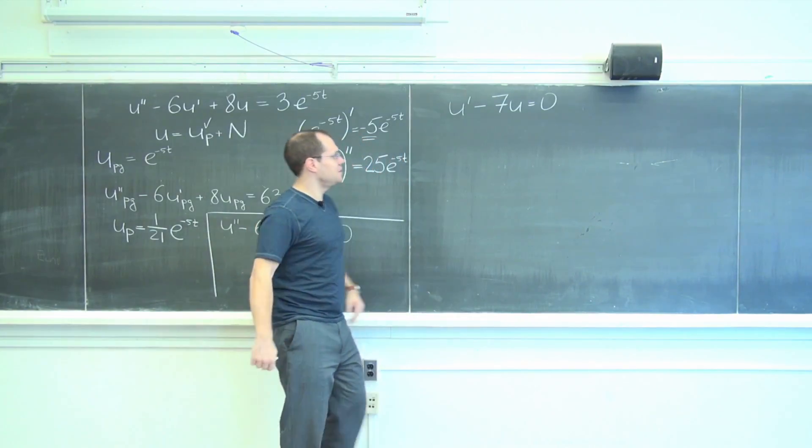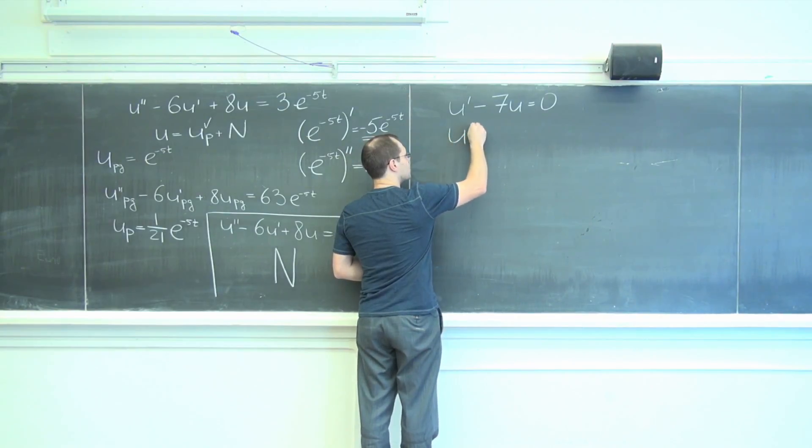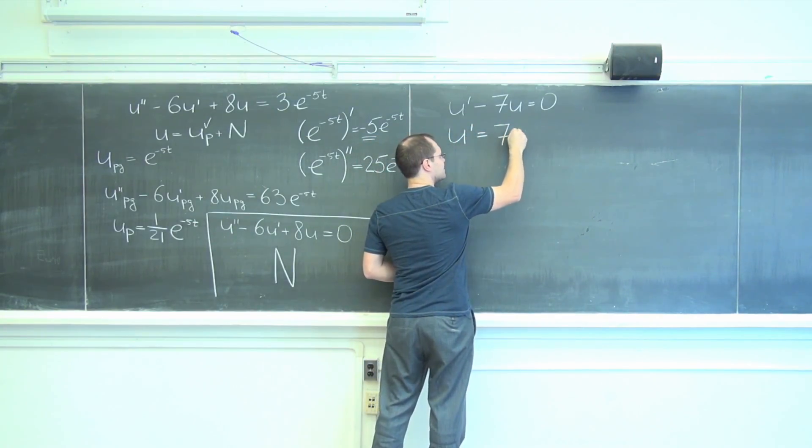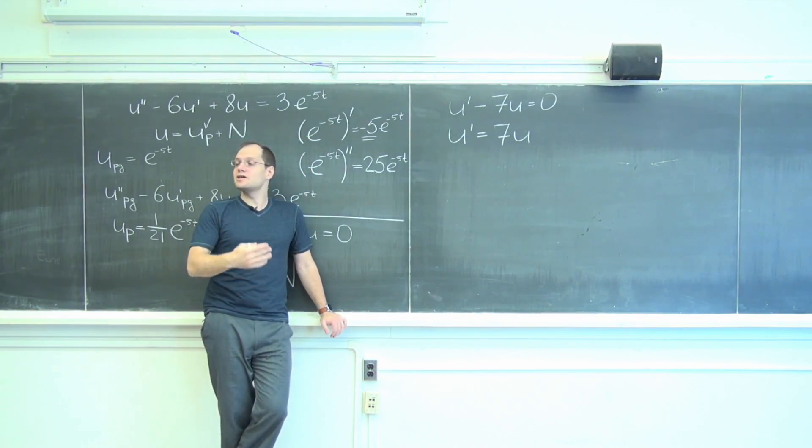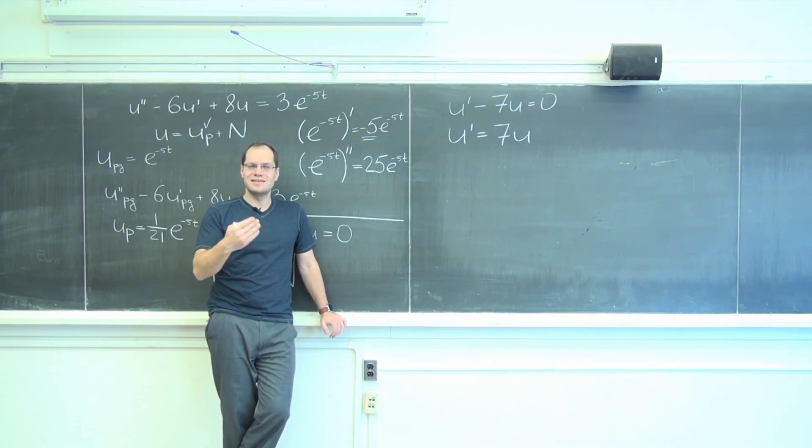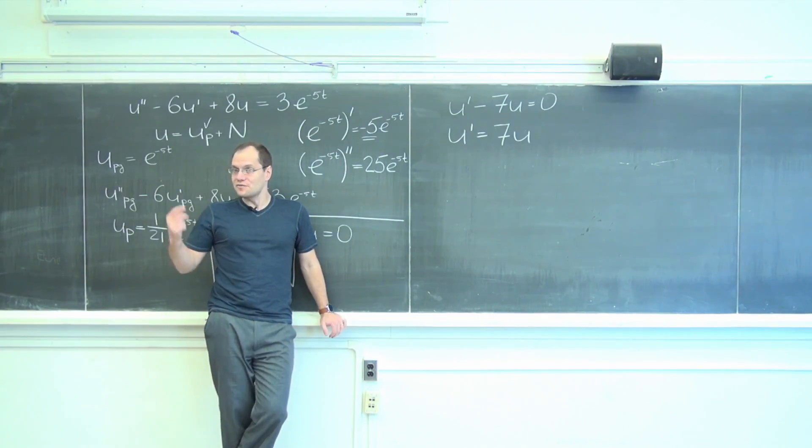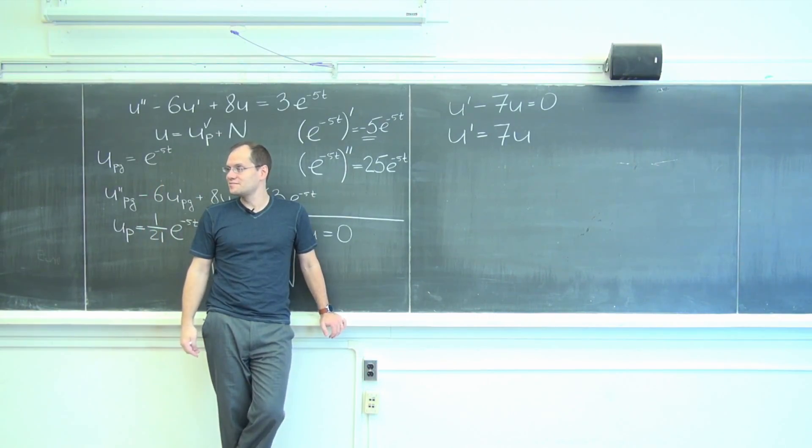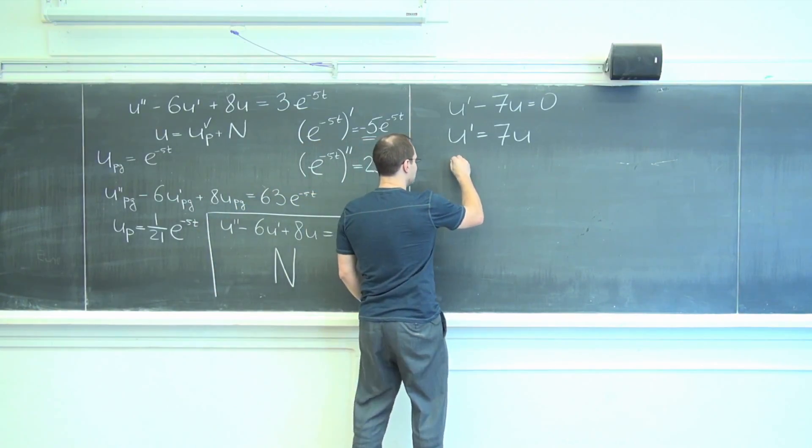I will write it in this form: u' equals 7u. The way you would describe it in words is I'm looking for a function whose derivative is seven times the function. And of course it's e to the 7t, and nothing else. Or is it?